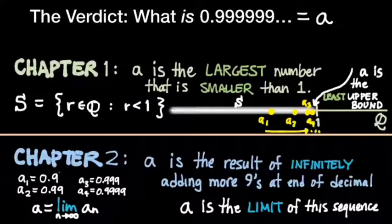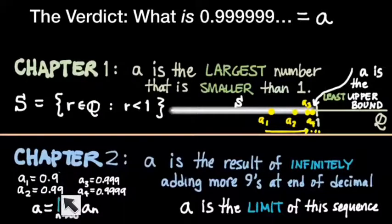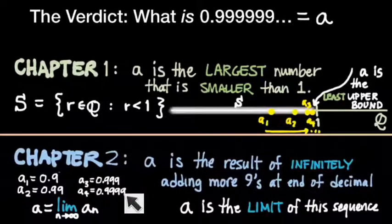but we also, during the mock trial, convinced ourselves that another way to represent 0.9 repeating was as the iterative process of taking the number 0.9 and then adding another 9 at the end of its decimal expansion. So 0.9 followed by 0.99 followed by 0.999 and so on.